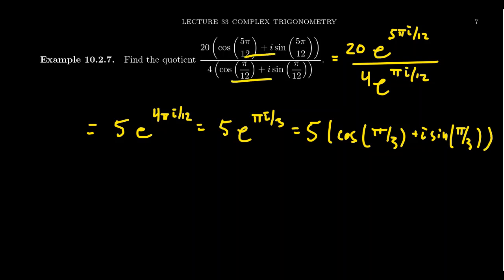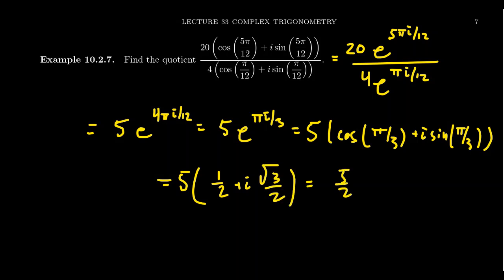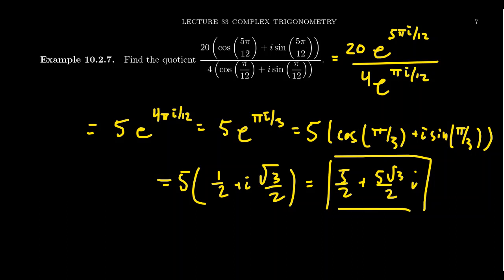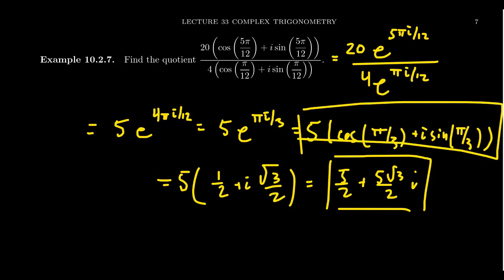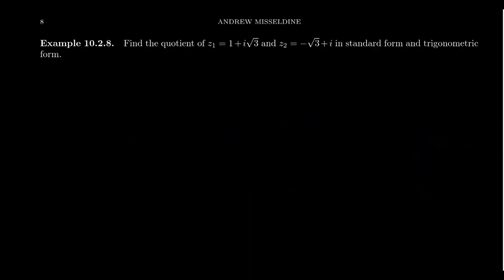We could leave the answer as 5(cos(π/3) + i sin(π/3)) in trigonometric form, but since π/3 is a special angle, let's finish it off: cos(π/3) = 1/2 and sin(π/3) = √3/2, giving us 5/2 + (5√3/2)i. That is the complex quotient in Cartesian form — you can leave it in trigonometric form or go all the way to Cartesian.